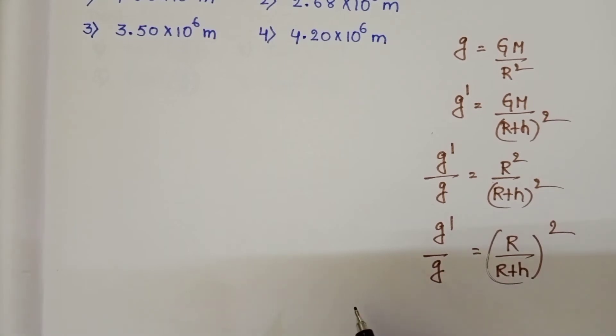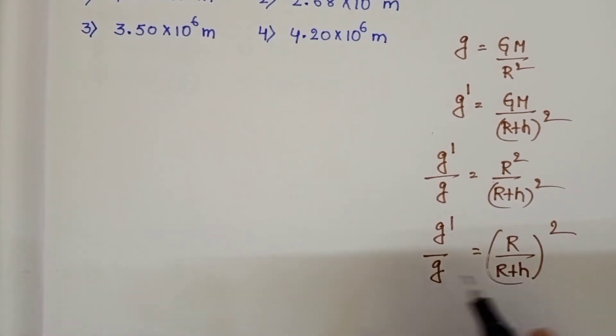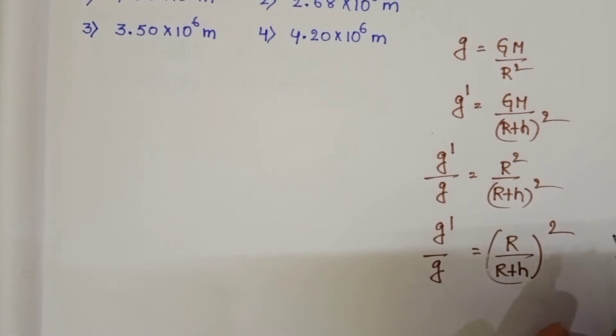Now when you know this formula directly, use this one, but we get in this way: g dash by g equals r by (r plus h) whole square.